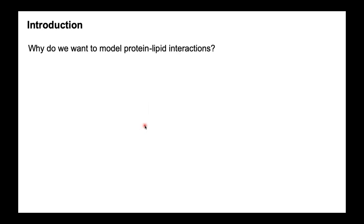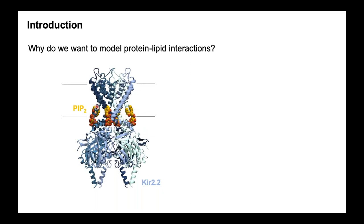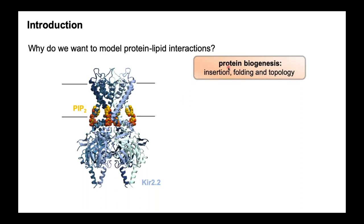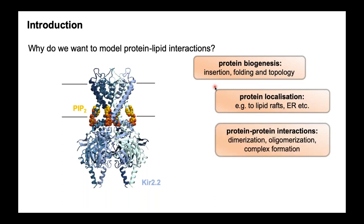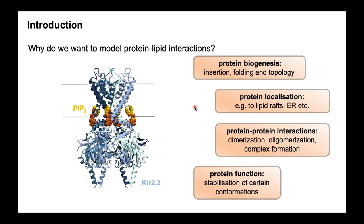Why do we want to model protein-lipid interactions? I mean specific lipid interactions: when a particular lipid, such as PIP2, binds to a defined binding site region on the surface of a protein of interest, such as the Kea 2.2 ion channel. These interactions are typically quite long-lived — microsecond timescales and above — and they can have profound effects on the protein. They're important in the biogenesis of the protein, how it inserts and folds in the membrane, how the protein is localised within the cell, they help mediate protein-protein interactions such as dimers, oligomers and complexes, and they can directly impact the function of the protein. An example is PIP2 binding to the Kea channel, stabilising its open conformation.